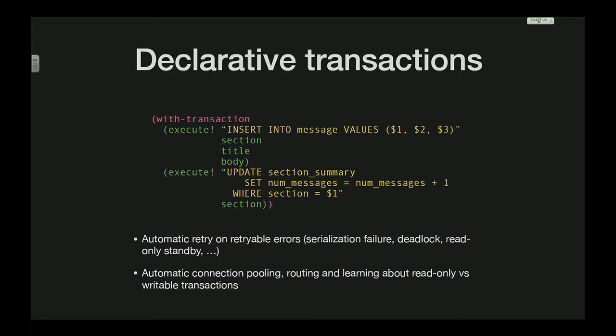Another thing I'm interested in doing with Scheme in Postgres is automatic transaction management. For example, if you're using serializable isolation and want to deal with retries, if you explicitly or declaratively mark the chunk of code that is a transaction, it can help you retry automatically, which is quite useful.